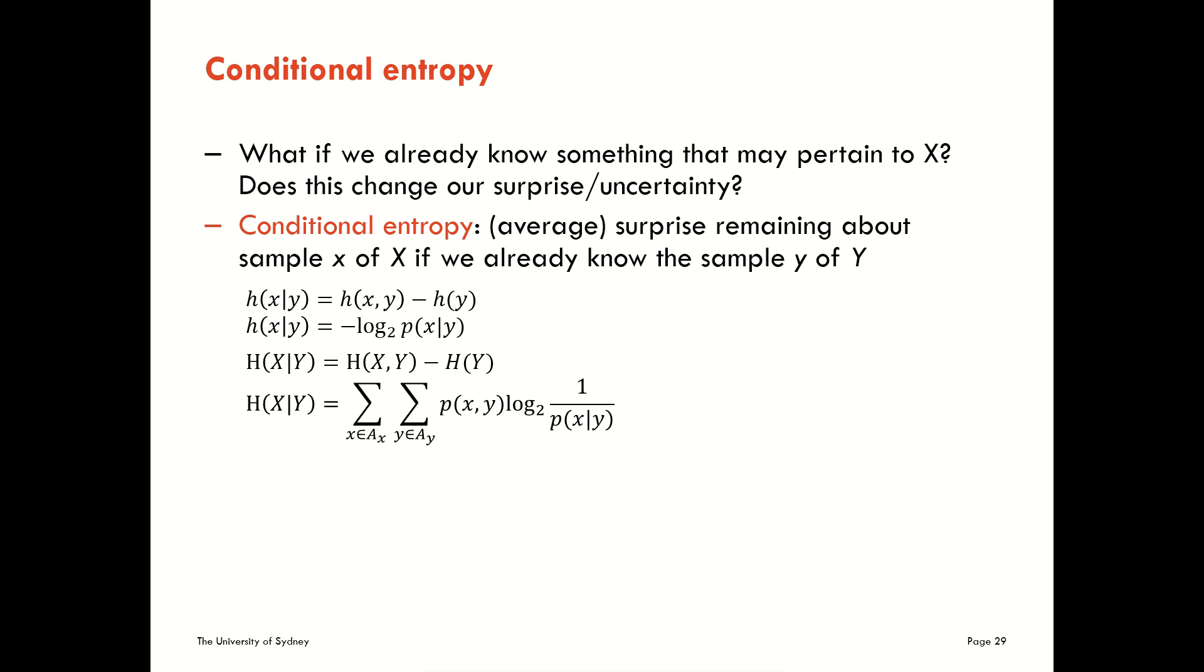We were talking before about moving to consider joint entropies, which means considering the uncertainty in several variables. We hinted a little bit about how that total uncertainty may be different in general to when we consider the uncertainty about each variable on their own.